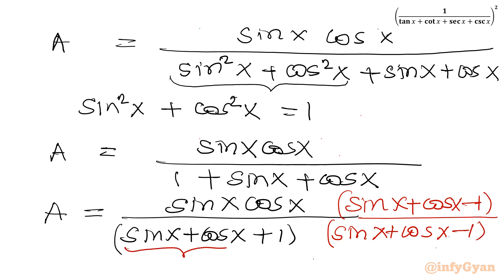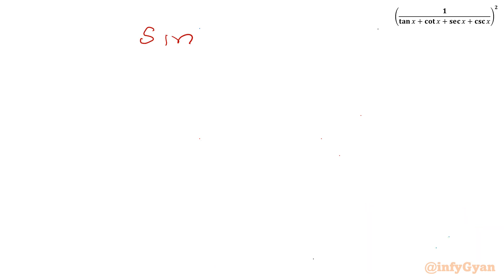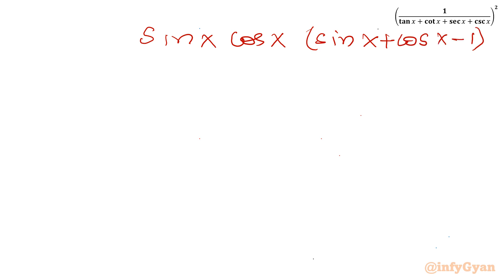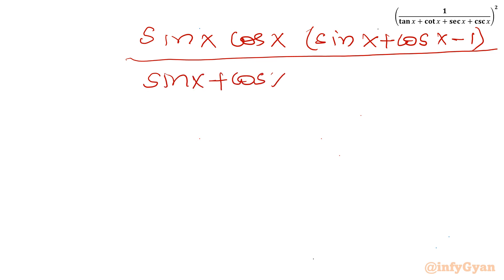In the denominator, we have (sin x + cos x + 1)(sin x + cos x − 1). This is of the form (a + b)(a − b) = a² − b², so the denominator becomes (sin x + cos x)² − 1². Expanding: sin² x + cos² x + 2 sin x cos x − 1.